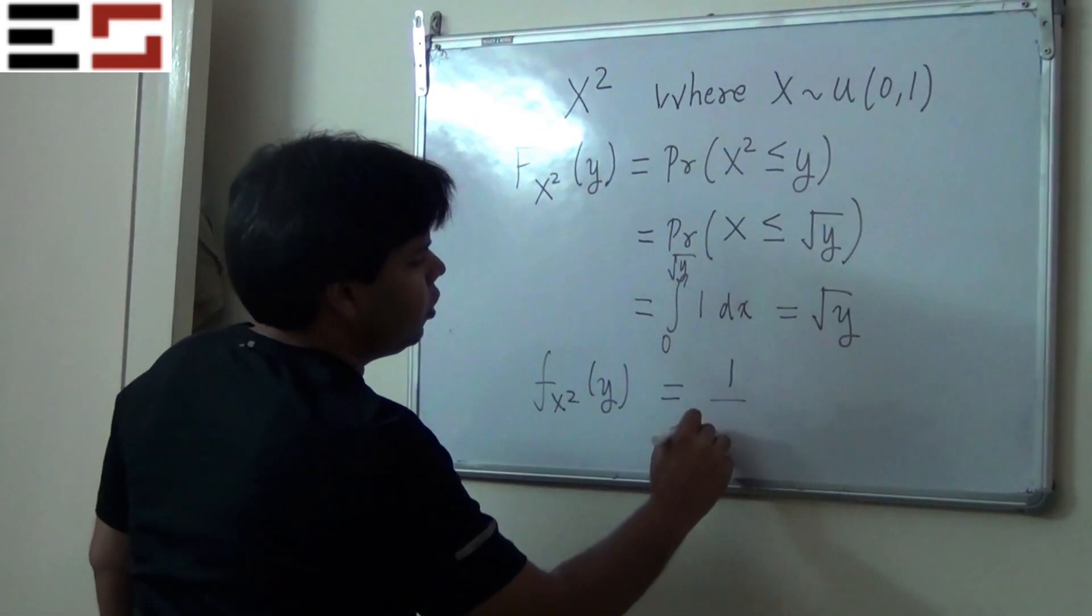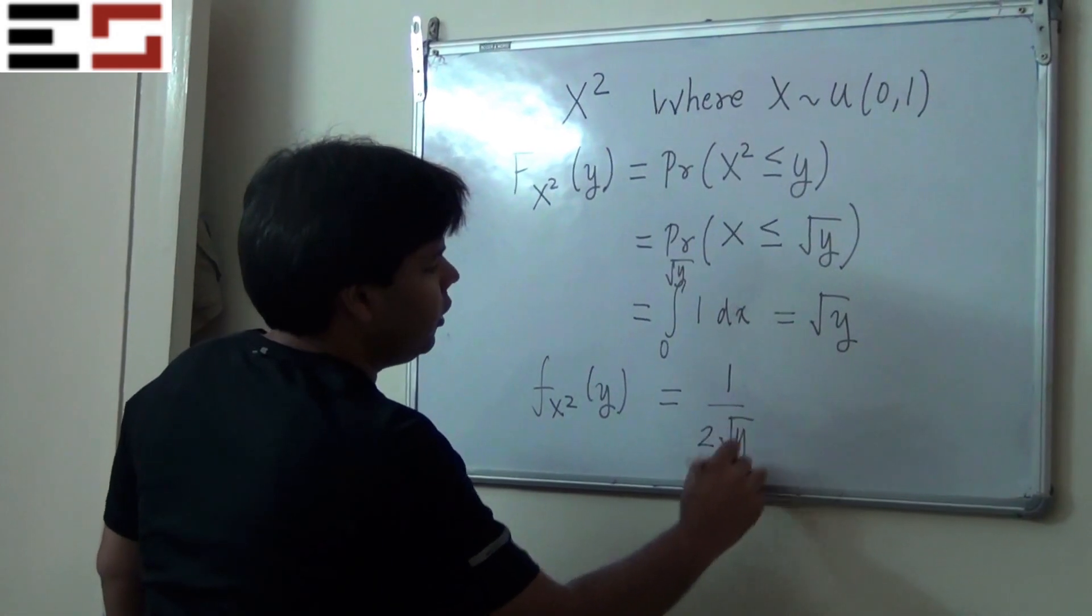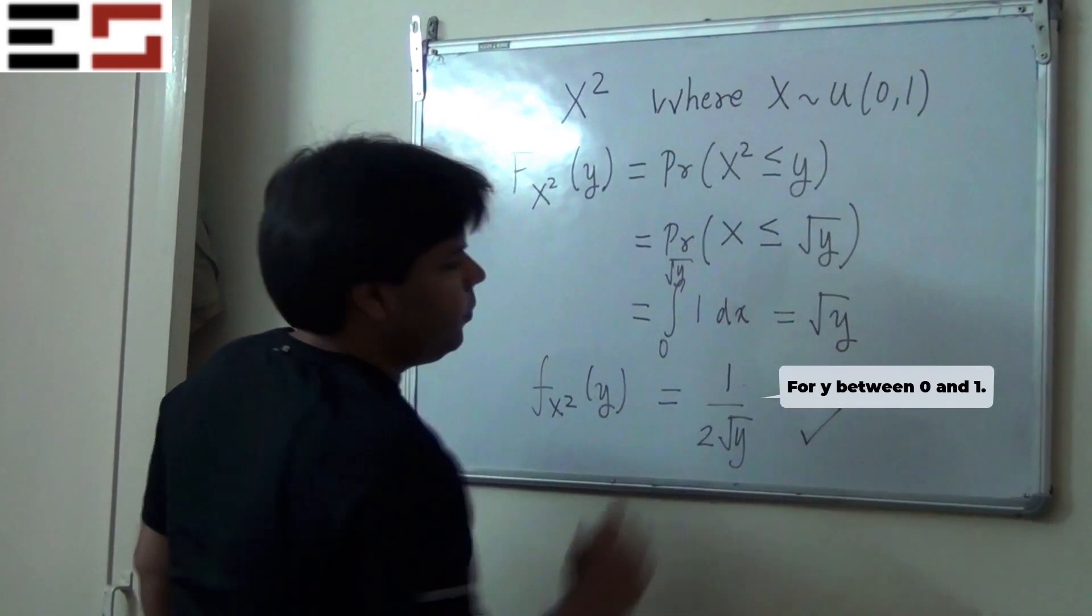So you're going to get 1 upon 2 root y. And that's it. Thank you.